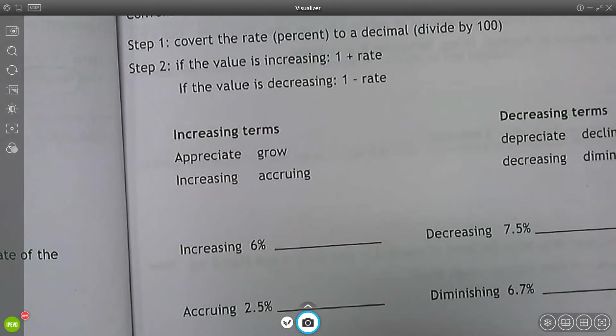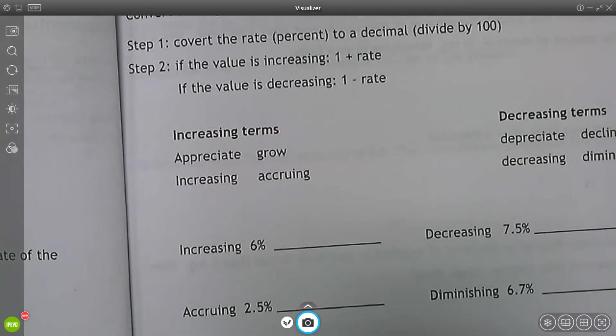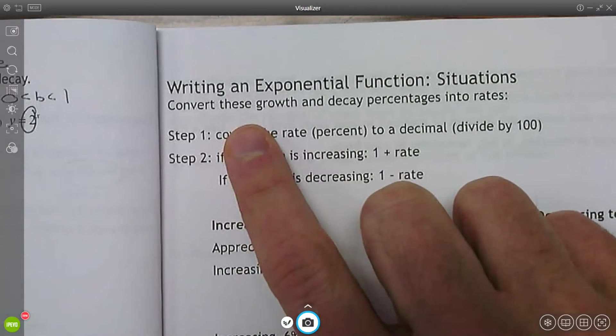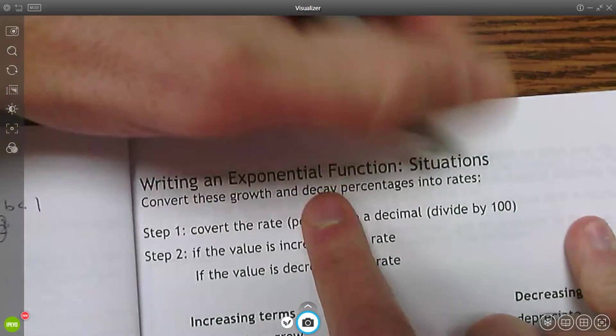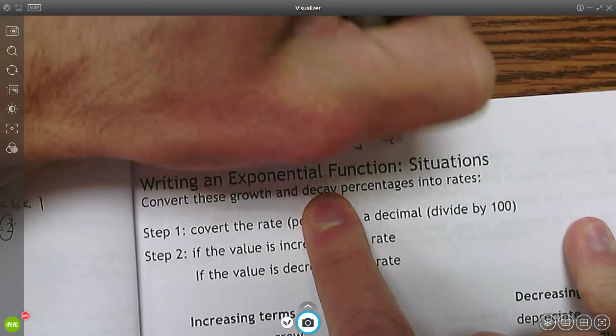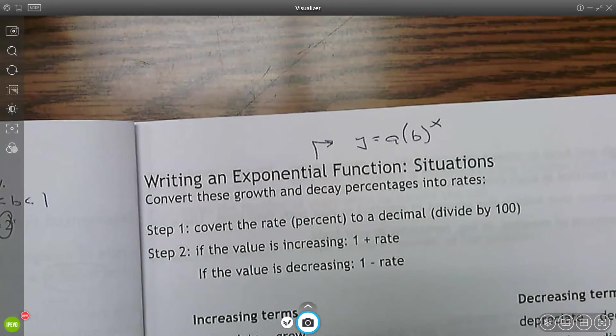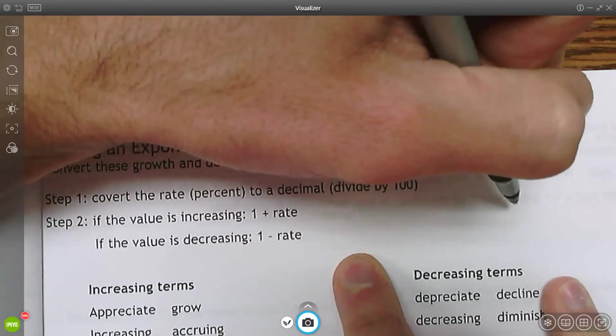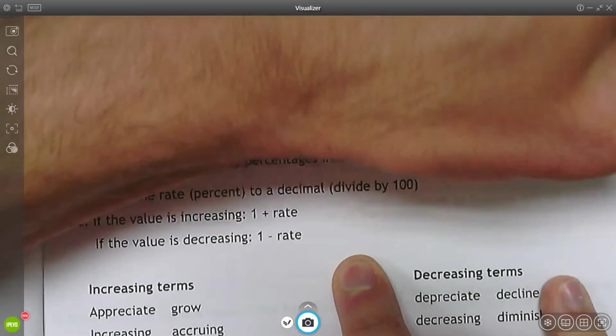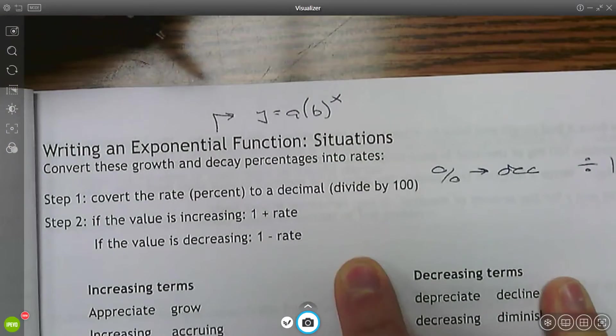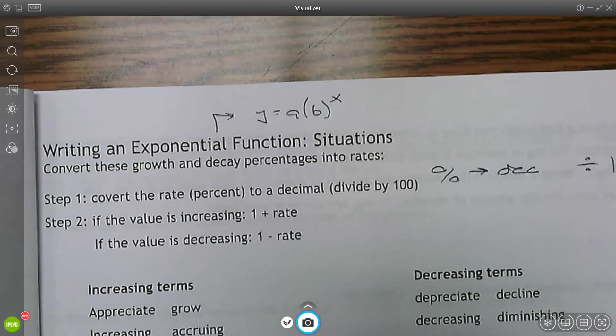All right. Moving on to page nine. Now what we're going to get into is some context, some word problems that apply these concepts. So we're going to be trying to write an exponential function. And remember, the form is just y equals a times the base raised to the x power. We had been converting to percentages. Now we're going to go the opposite way. If we go from a percent to a decimal, we're going to divide by 100.